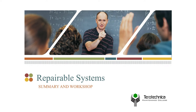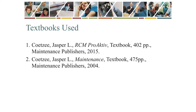If you are viewing this, you have probably completed the work on the renewal theory and replacement analysis for components. It is now the right time to move on to the theory for systems. The textbooks used are both by Jasper Coetzee and both are published by Maintenance Publishers. They are RCM Proactive, a textbook with 402 pages published in 2050, and Maintenance, a textbook with 475 pages originally published in 1997 and updated in 2004.